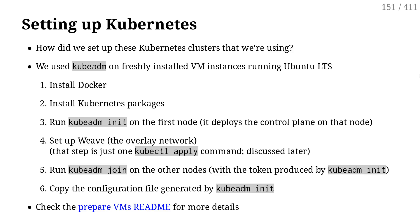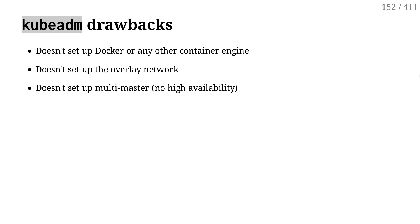Next, we set up the networking — in our case, since we're using Weave, it's just one command. We run one kubectl command and it automatically takes care of everything. Then we use kubeadm join on the remaining nodes. And that's it.